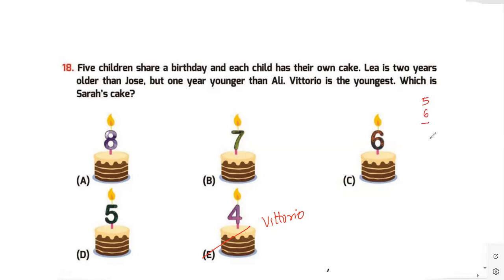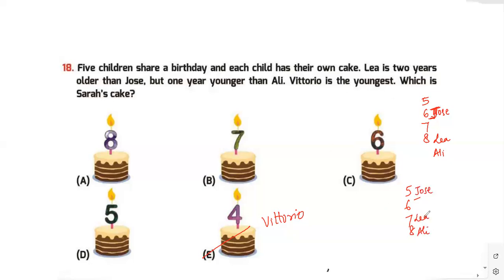The remaining numbers are five, six, seven, and eight. Leah is two years older than Uzay. If I try Uzay as one value, then Leah is two years older and one year younger than Ali, so Ali is older than Leah. Working through the arrangement: Uzay gets one value, Leah is two years older, and Ali is one year older than Leah. This means the number six belongs to Sarah. So Sarah's cake is the one with the number six, which is option C.